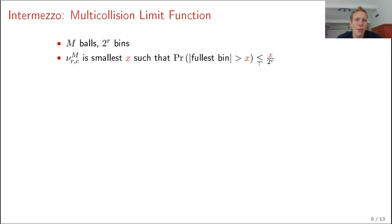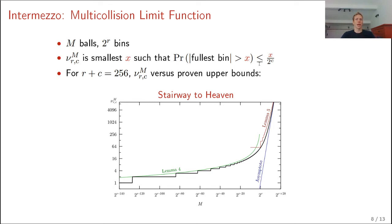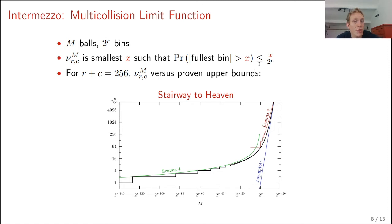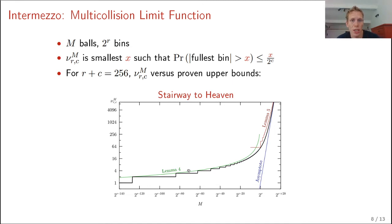This bound was analyzed in work by Daemen et al. at AsiaCrypt 2017 on the analysis of the full-keyed duplex. For a specific case of r plus c equal to 256, a graph of nu_RC(m) was given — a stairway-to-heaven graph. There are two lemmas that derive upper bounds on this graph, and these bounds are quite good; we will use these lemmas later on.